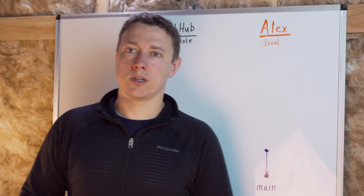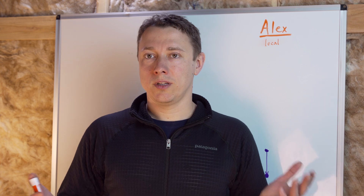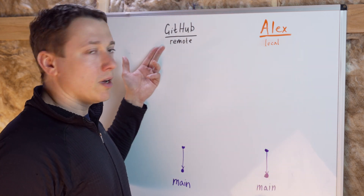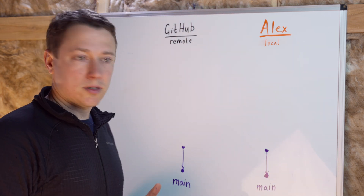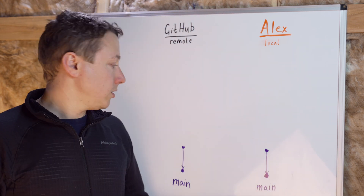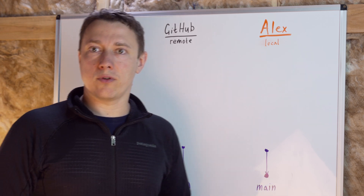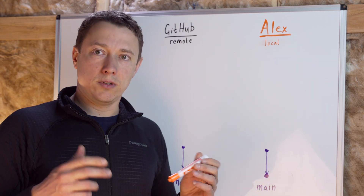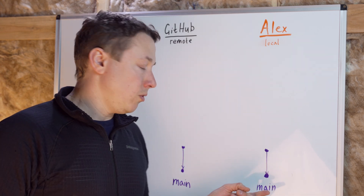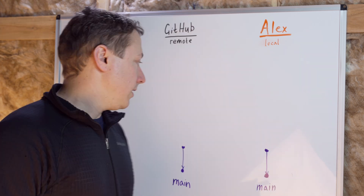A typical Git workflow starts when you clone the remote repository to your local system, for example from GitHub. This copies the entire repository from the remote to your local and you get the latest version of the default branch, which is main or master depending on how old you are.